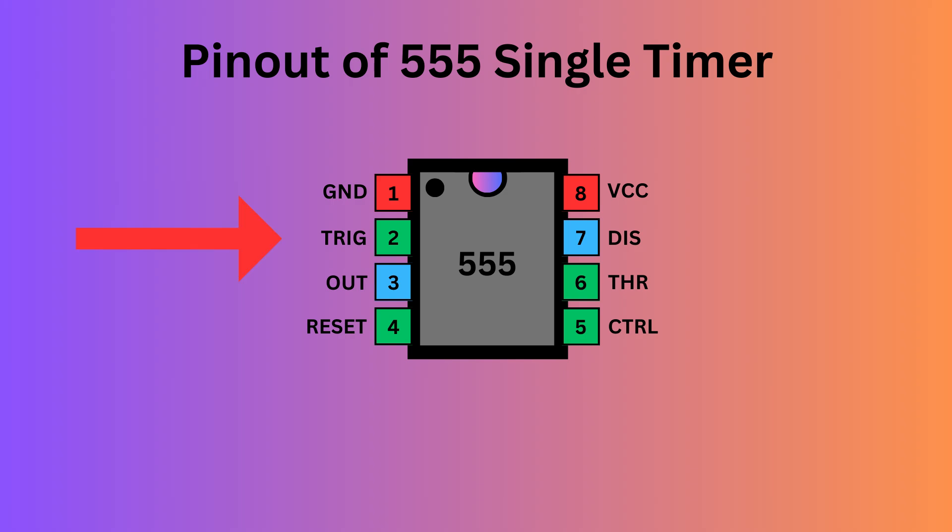Pin 2, the trigger pin, initiates the timing interval in monostable and astable modes. Pin 3 serves as the output, providing the timer's operational result depending on its mode: monostable, astable, or bistable.